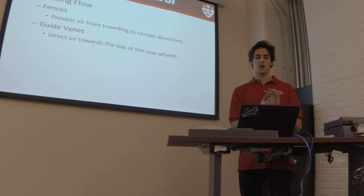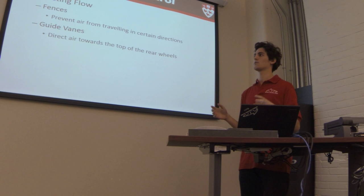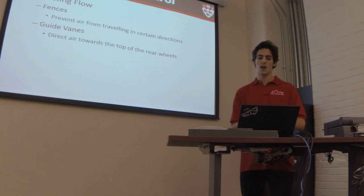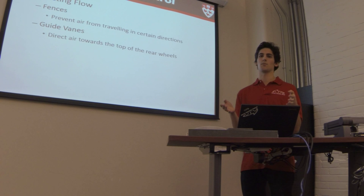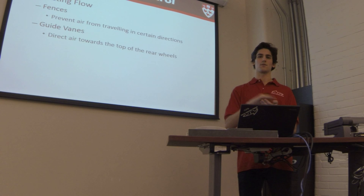So another thing I want to talk about is flow control. So you have your macro scale things like the wings, the undertray, and then you can look at controlling the flow around and through them. So there's different devices that you can use to do this. One example is a fence device, and an example of that on our car would be the end plates. So it's essentially just a block that's designed to prevent air from traveling in certain directions. So sometimes you'll see this on airfoils as well, along the span of a large wing, you have several vertical fences that prevent any transverse flow from occurring.